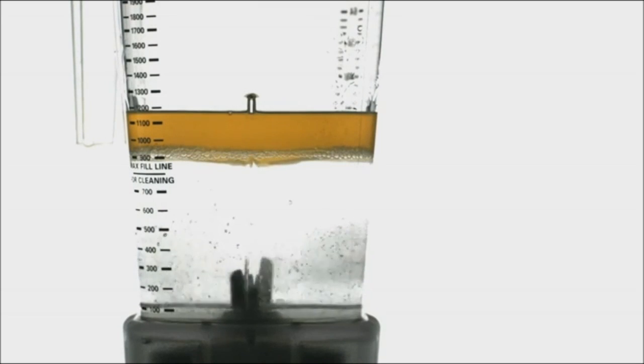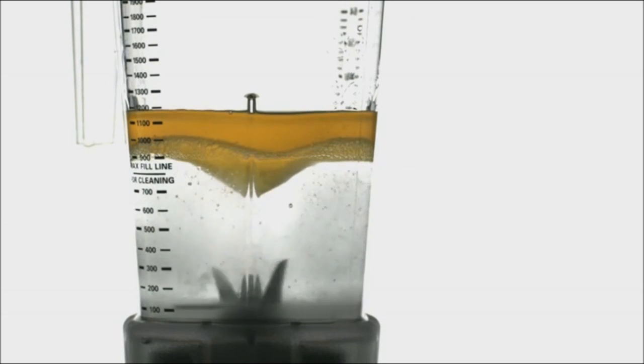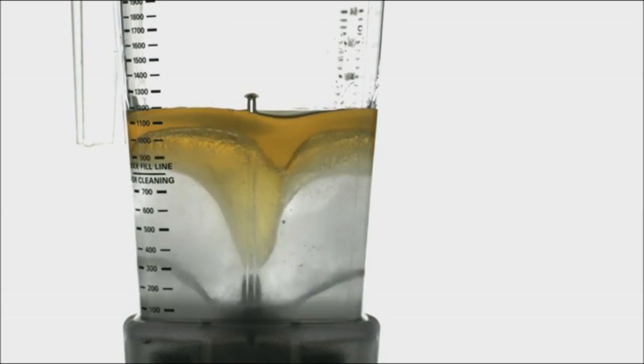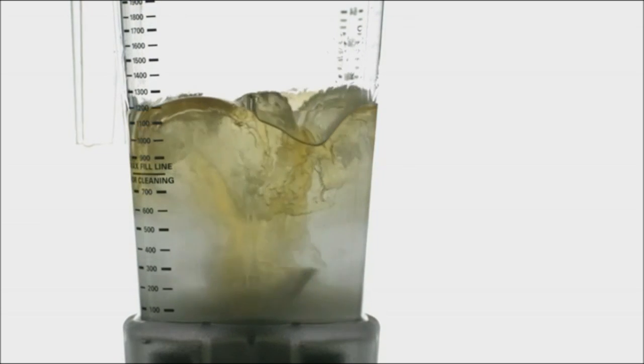As oil tries to slip past the fast-moving blades, the turbulence literally rips it into minuscule droplets that are dispersed into the surrounding liquid to create a rich, smooth emulsion.